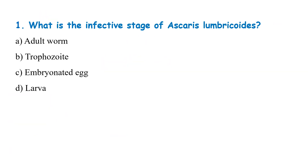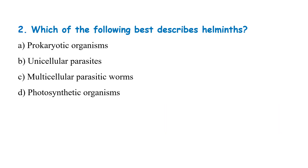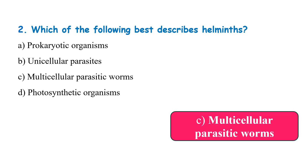What is the infective stage of Ascaris lumbricoides? Adult worm, trophocytes, embryonated egg, or larva? The correct answer is embryonated egg. Which of the following best describes helminths? Prokaryotic organism, unicellular parasites, multicellular parasitic worm, or photosynthetic organism? The correct answer is multicellular parasitic worm.